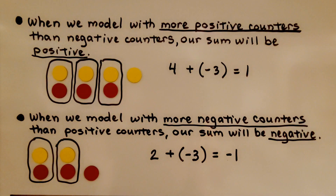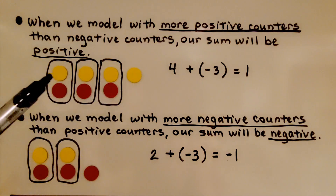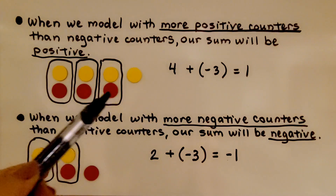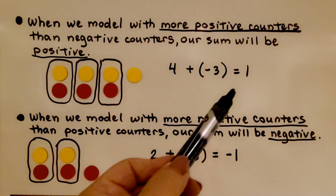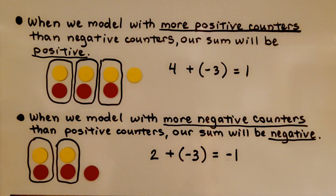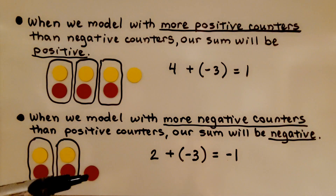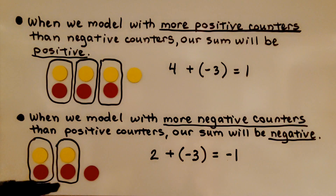When we model with more positive counters than negative counters, our sum will be positive. We have positive four — four yellow counters — adding negative three, so three red counters. We have one positive counter left over, so our sum is positive. When we model with more negative counters than positive counters, our sum will be negative. For example, positive two plus negative three gives a sum of negative one.